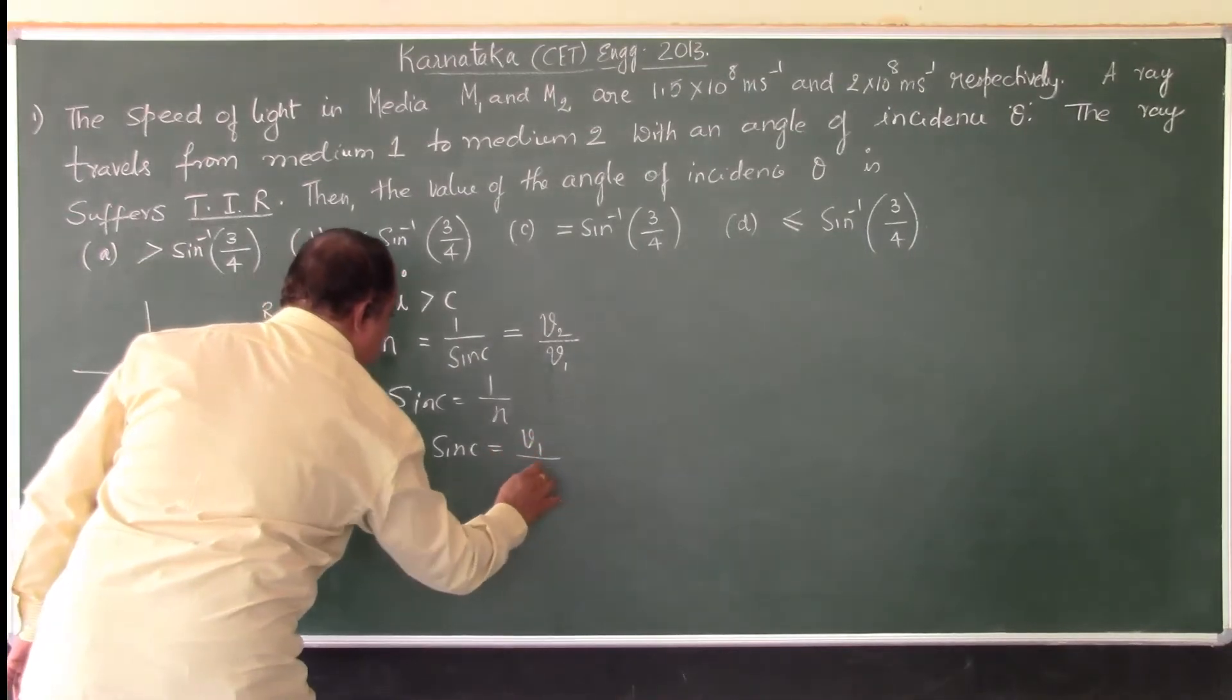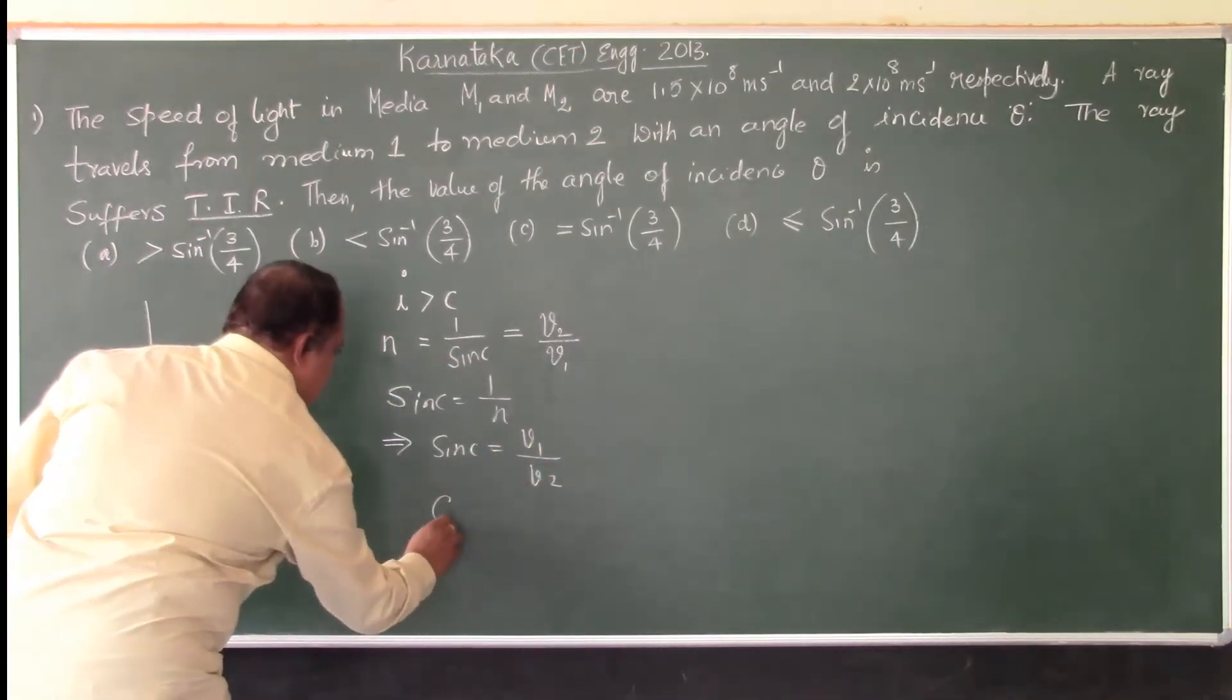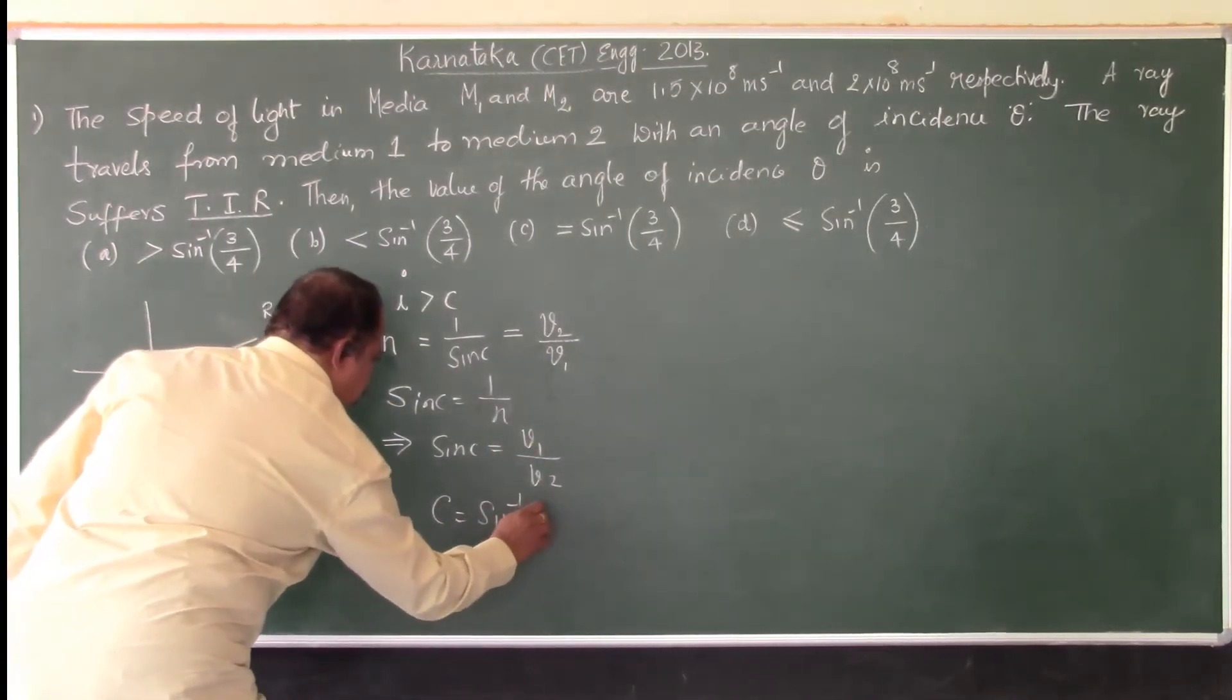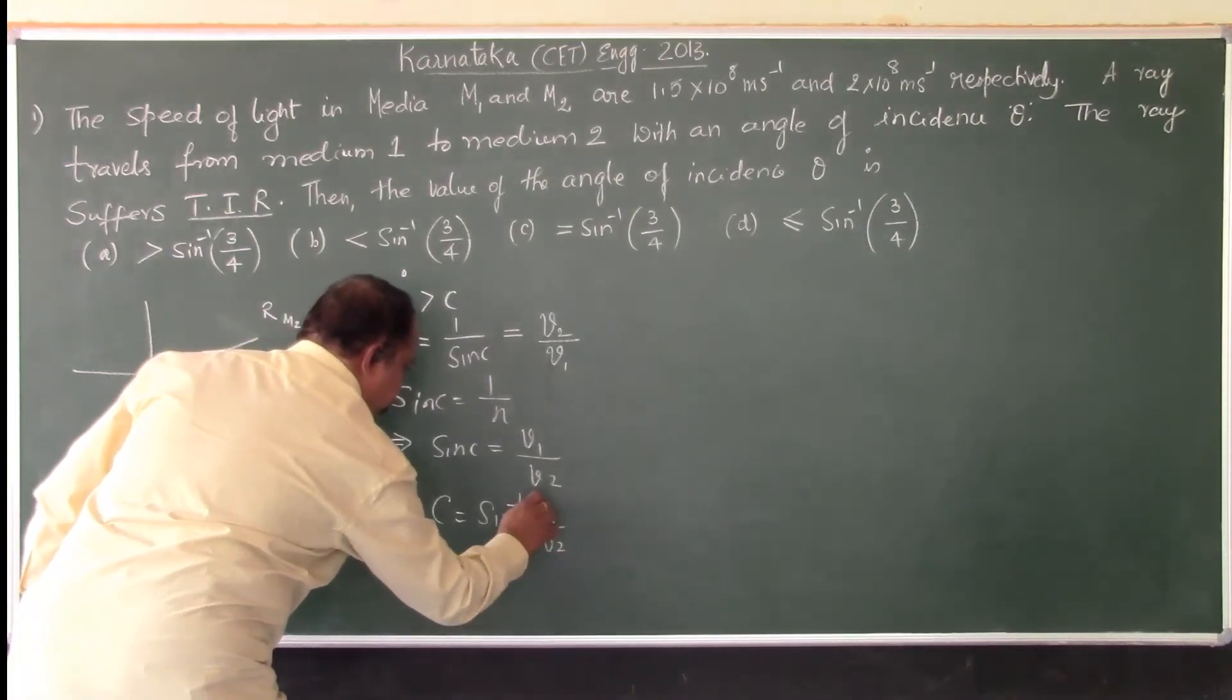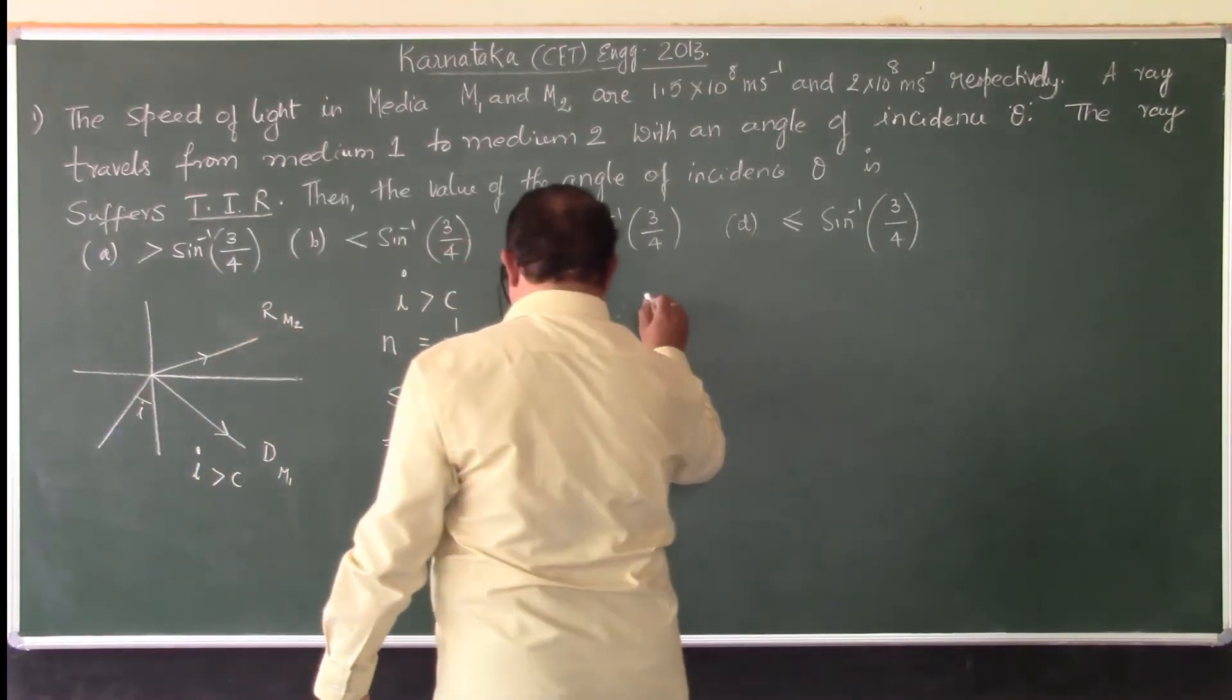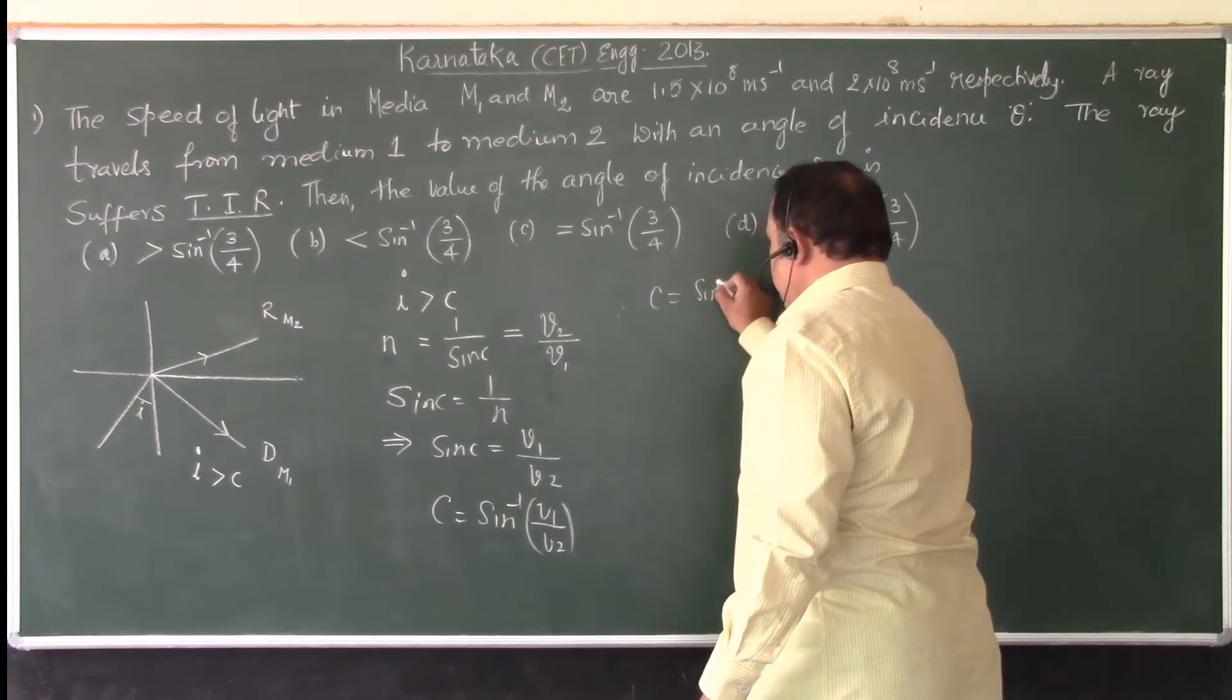So, I have to take V1 by V2. So, C is sin inverse of V1 by V2. Therefore, C is equal to sin inverse of, now, the speed of light or velocity of light in the two media are given.